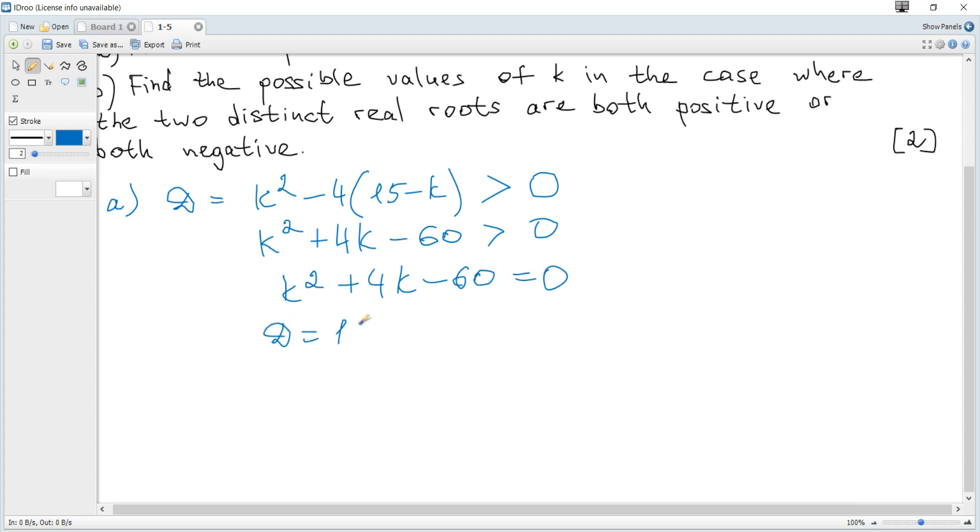The discriminant is b², which is 16 - 4ac. This equals 256. So k = (-b ± √d) / 2a.